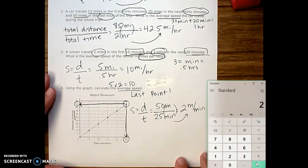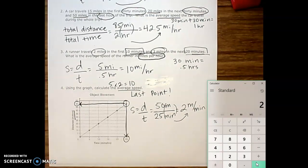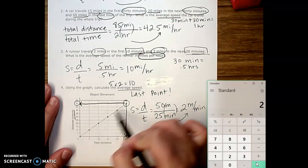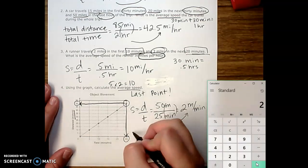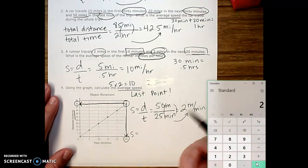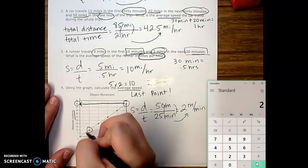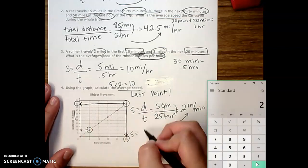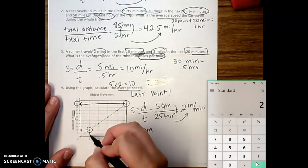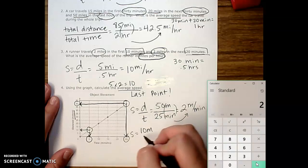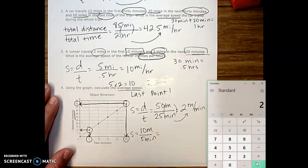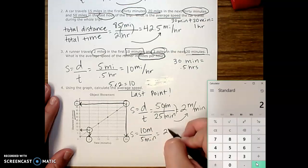What's cool about a straight line on a speed graph is that any point you pick is going to give you the same speed, because a straight line shows constant speed. So if you pick a lower point for easier numbers — say distance is 10 meters and time is 5 minutes — 10 divided by 5 is again 2 meters per minute.